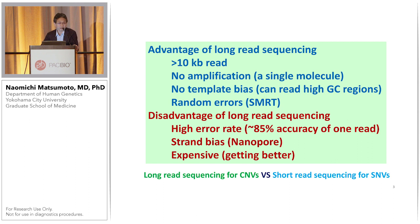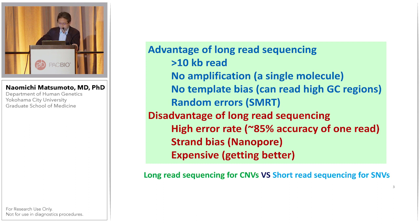The advantage of long-read sequencing: reads of more than 10 KB, no amplification, no template biases — so it can read high GC regions — and random errors, especially in SMRT sequencing technologies.